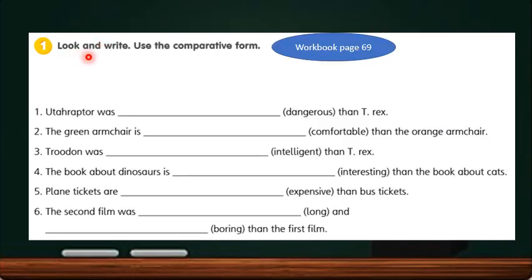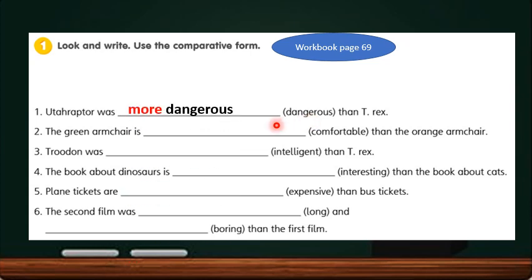Let's try the exercise in your workbook at page 69, Activity 1: Look and write — use the comparative form. Number 1: Utahraptor was ___ than T-Rex. Dangerous is a long adjective with more than two syllables, so we have to add more before the word to change it to the comparative form. It becomes more dangerous.